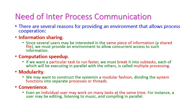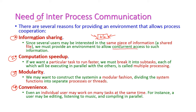Next, let us see what is the need for inter-process communication. There are several reasons for processes to communicate with each other. The first one is information sharing, which means some piece of code or data may be shared by more than one process. We need to create an environment to share such files or information that is common for all processes, so all processes can concurrently access that information.